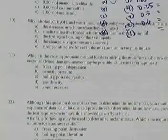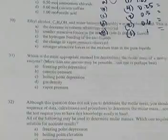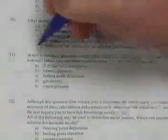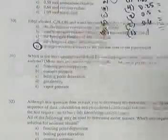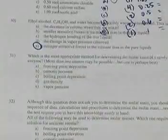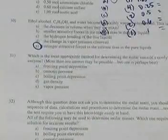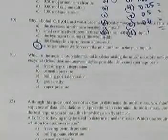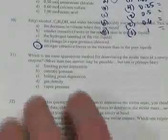Number 30: ethyl alcohol and water become noticeably warmer when mixed. This is due to stronger attractive forces in the mixture than in the pure liquids — they release energy when they bind together, probably due to hydrogen bonding.